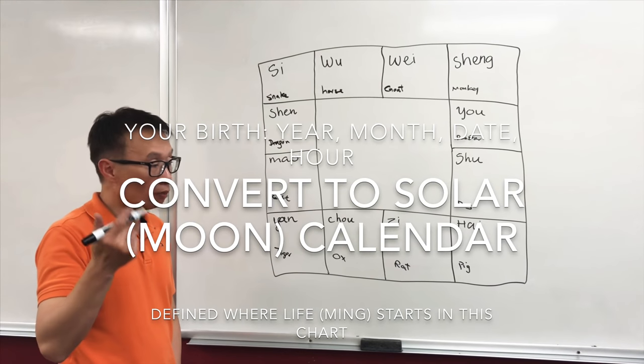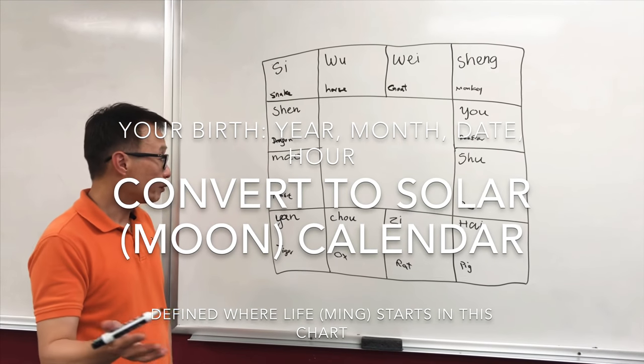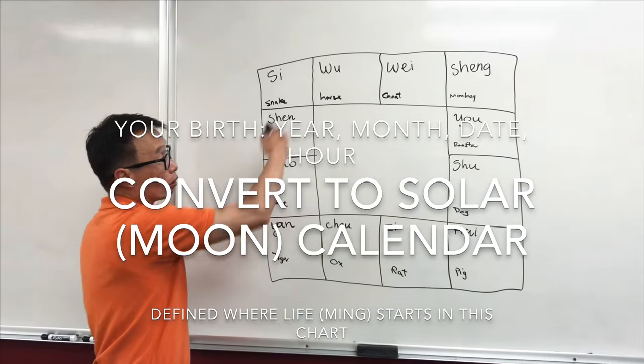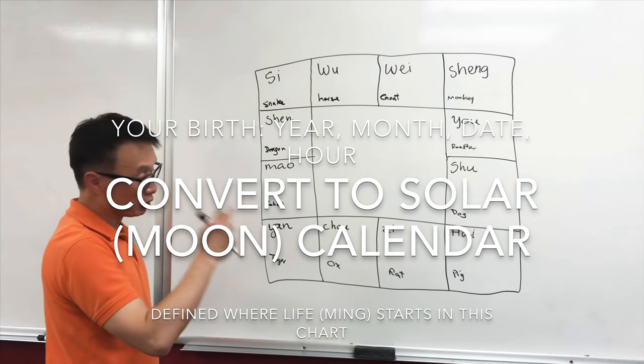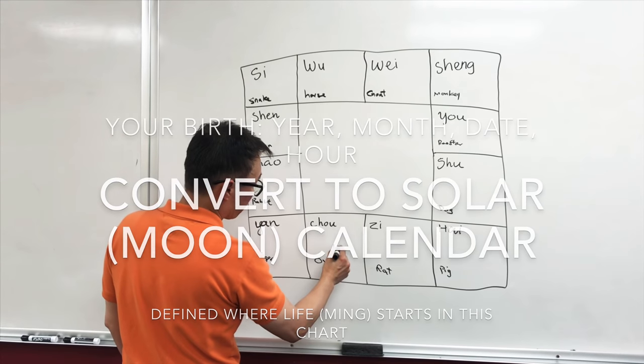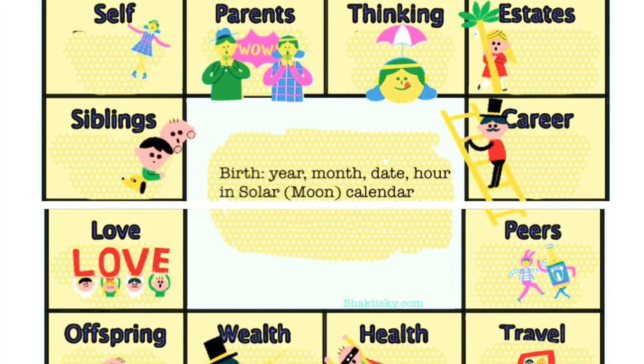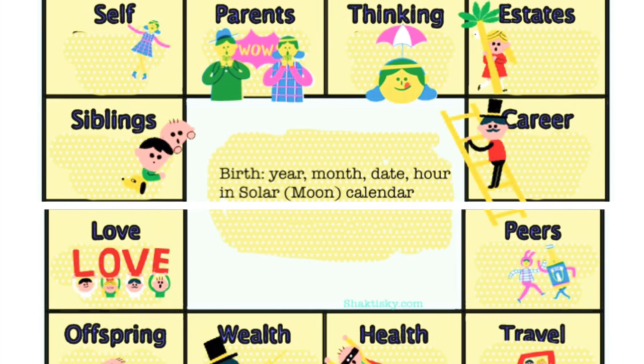Depending on the year you were born, the month you were born, the date you were born, and the hour you were born, you define it in one of these houses and it's your life house, your life.